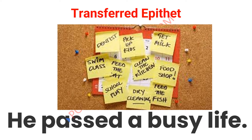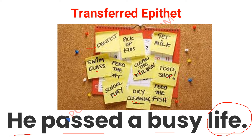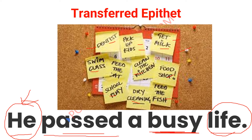Let us look at these sticky notes: dentist, pick up kids, get milk, swim class, school play, dry cleaning, feed the fish, food shop — so many things a person is doing. That means the person is very busy. So we say 'he passed a busy life' or 'he is having a busy life.' But the life was not busy; life had the same 24 hours for everyone. It is the person who is extremely busy with all these chores. So 'busy life' is also a perfect example of transferred epithet — actually the person is busy, but we say the life is busy.